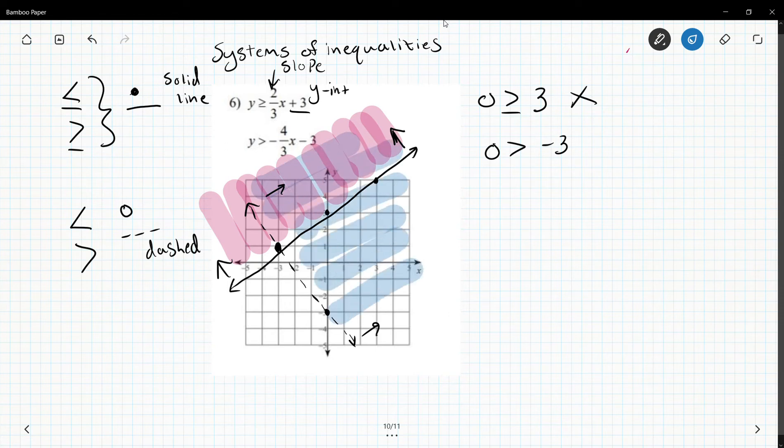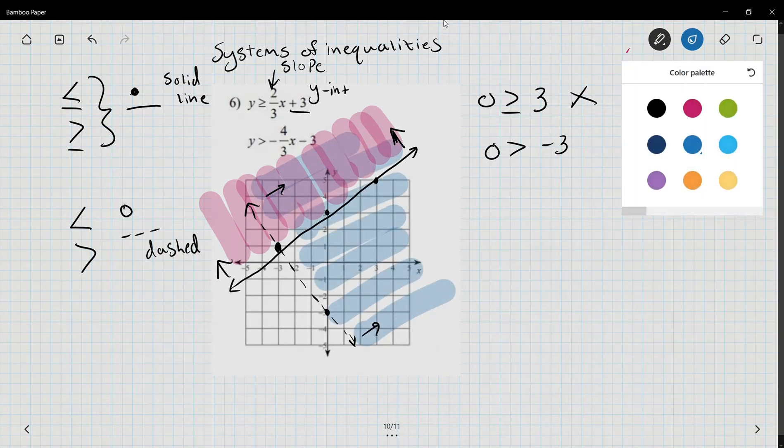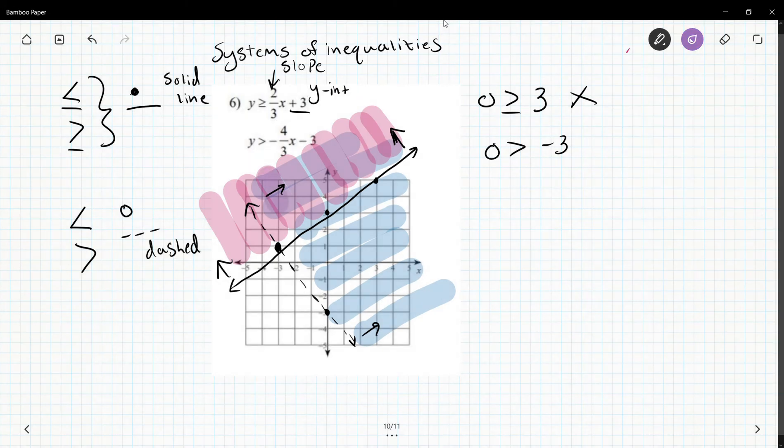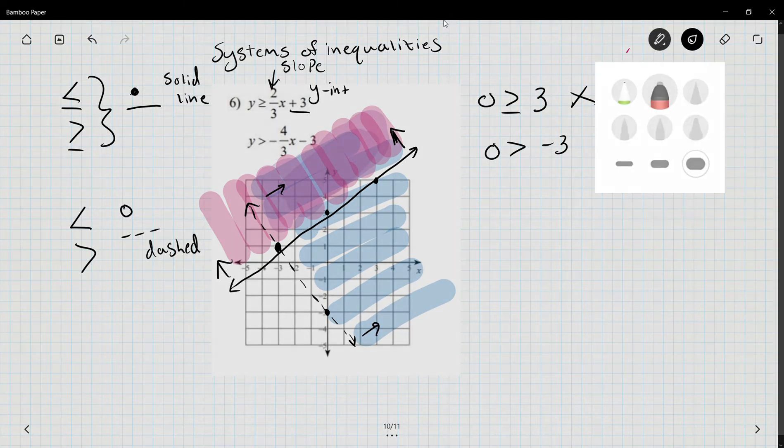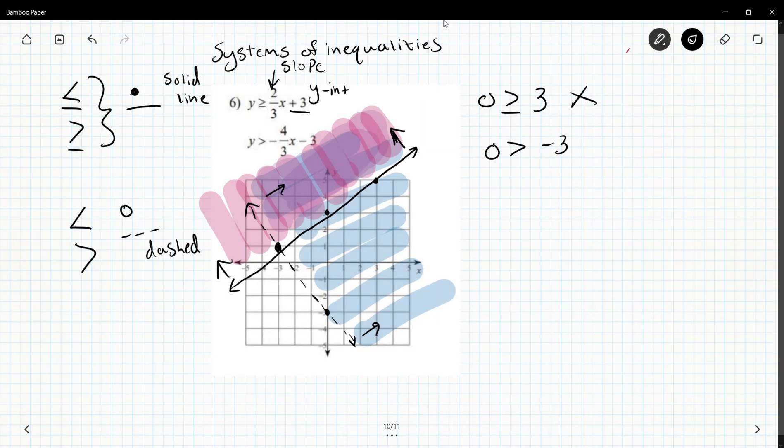And what I'm looking for is this overlapped portion. So in this case what I'd be looking for is this to all be shaded in or to have that overlap of color. All right, so there is one example where it's already set in slope intercept form.